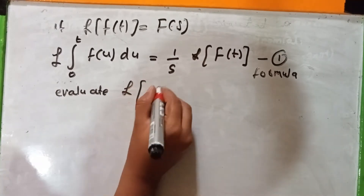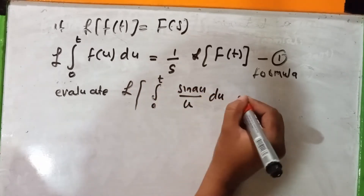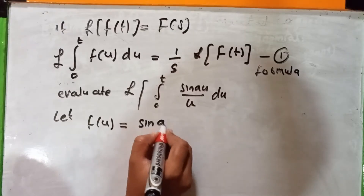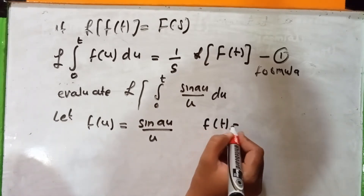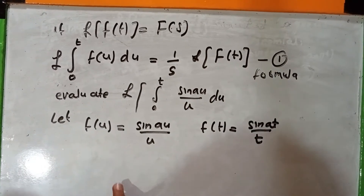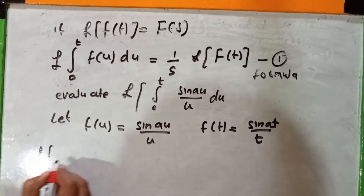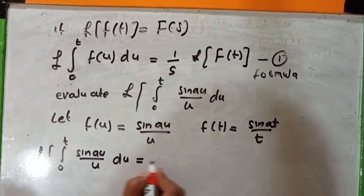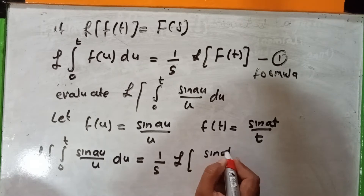Evaluate Laplace of the integral from 0 to t of sin(au) over u du. Let f of u equal sin(au) over u, so f of t equals sin(at) over t. Using equation 1, Laplace of the integral from 0 to t of sin(au) over u du equals 1 over s times Laplace of sin(at) over t.